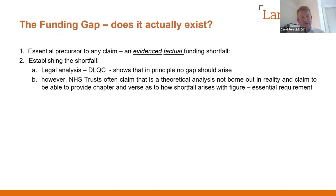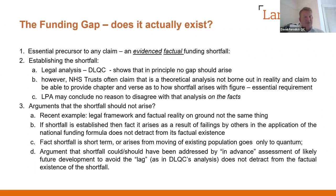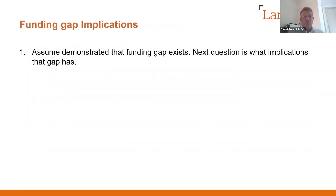However, NHS trusts often claim that is a theoretical view of the world, not borne out in reality. They claim to be able to produce chapter and verse as to how the shortfall actually arises, with figures on the facts of their specific NHS trust. I regard that exercise as an essential requirement — they must be able to explain how and why on the facts it arises, despite the legal framework under which it shouldn't arise. In a case I was involved with recently, the head of clinical commissioning, a professor of surgery, and the head of the trust provided very detailed witness evidence, including detailed budgets and detailed economic analysis, to demonstrate the existence of the gap which they said they couldn't avoid. That sort of evidence base seems to me to be the essential starting point for a claim.